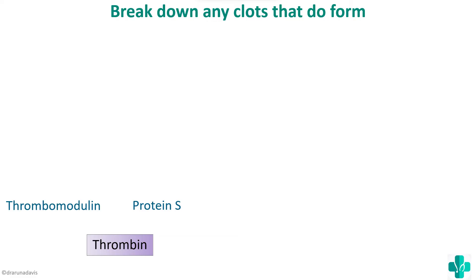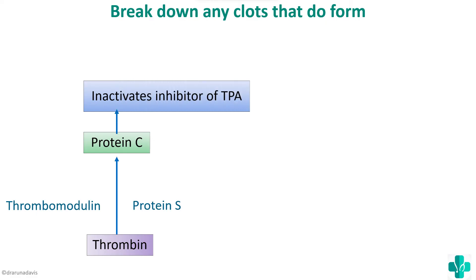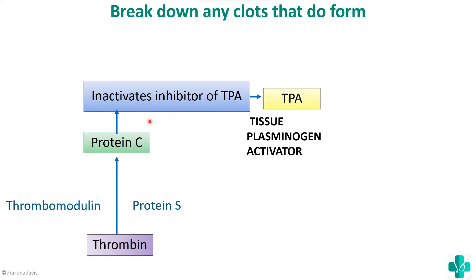As thrombin is activated during clotting, an anticoagulation pathway is simultaneously activated. The endothelium produces thrombomodulin, so thrombin combines with thrombomodulin and, along with protein S, activates protein C. Protein C then inactivates the inhibitor of TPA — this double negative means TPA, tissue plasminogen activator, becomes active.